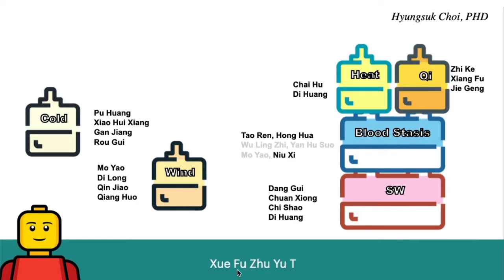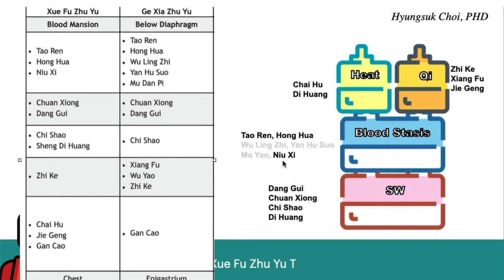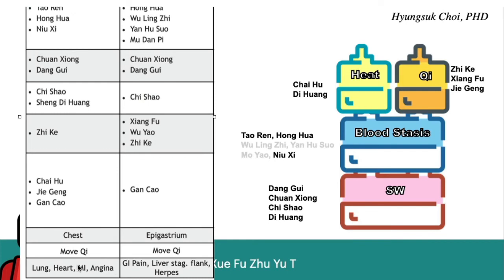First, let's look at Shu Fu Chuyutang. The components include Taoren, Honghua, and Nishu. Ji Ke, Xiang Fu, and Zhegeng regulate the Qi, because there is stagnation on the chest. That is the reason Wang Chinren used Jihegeng — it removes Qi stagnation around the upper jiao. Chaihu and Shen Dihuang subside the heat. This is for acute conditions like myocardial infarction or angina pectoris. When a patient has stabbing pain on the chest and shows signs of blood stasis, Shu Fu Chuyutang is used — for angina, myocardial infarction, and upper jiao blood stasis.